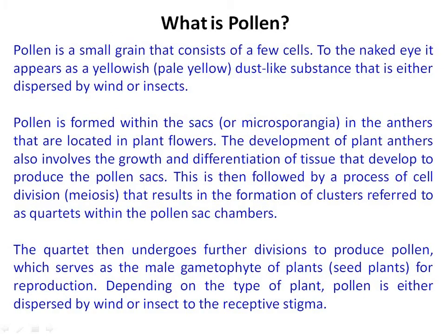These pollen grains are known as the male reproductive unit of a flower. The pollen grain is a small grain that consists of a few cells. To the naked eye, it appears as a yellowish or pale yellow dust-like structure that is either dispersed by wind or insect.